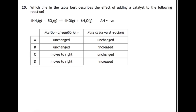Which line on the table best describes the effect of adding a catalyst to the following reaction? When you add a catalyst to a reaction, you don't change the position of equilibrium — you just get to that position quicker. So C and D are not correct. Catalysts will always speed up a reaction; for an equilibrium they speed up both the forward and backward reaction, but here we're only looking at the forward. So the answer is B.